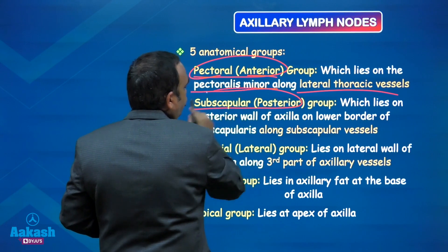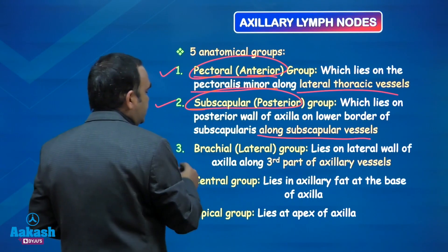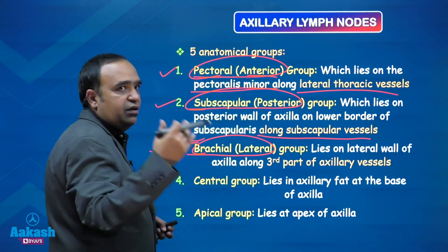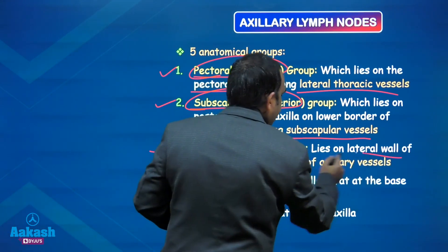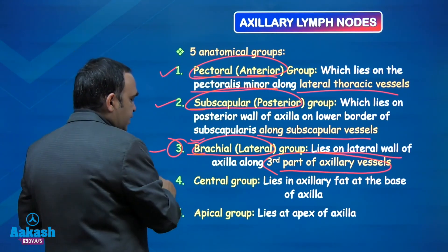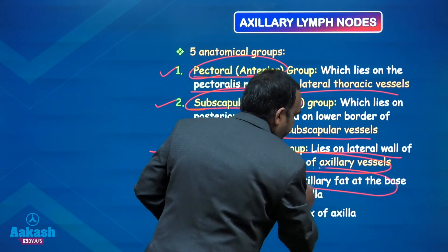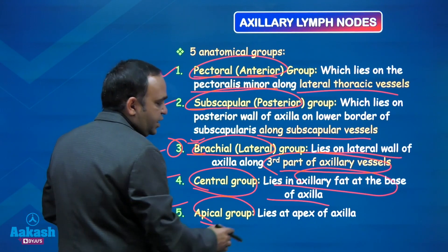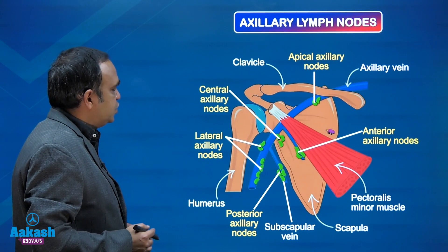The posterior group is the subscapularis group - as the name tells, it runs along the subscapularis vessels. Then the brachial or lateral group lies along the brachial vessels, which are continuation of the axillary vessels. Precisely, it lies in the lateral wall along the third part of the axillary vessels. Then central is at the center of the axilla - in the axillary fat. And apical is at the apex of axilla, above the pectoralis minor tendon.